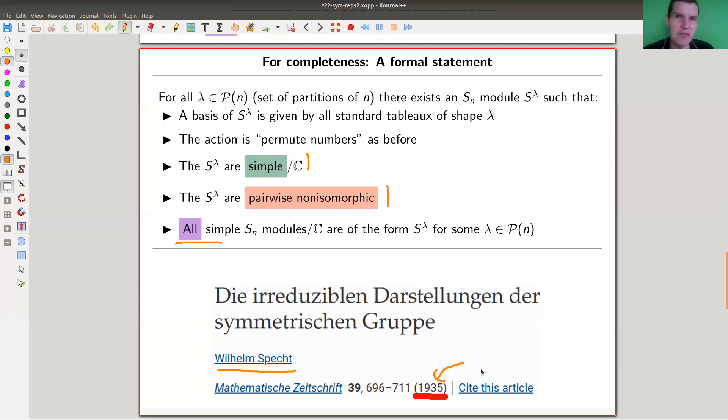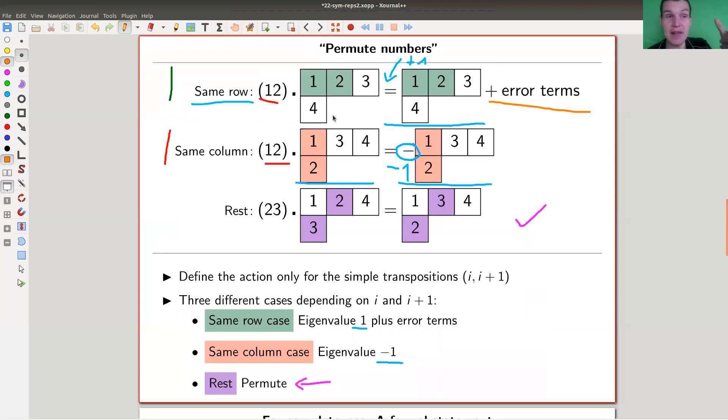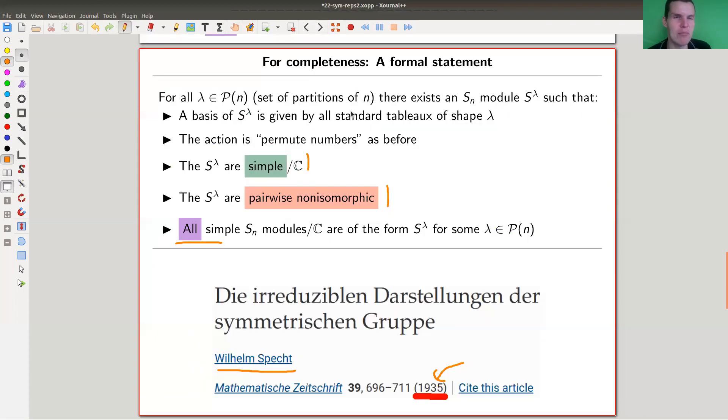There was a reason why it took so long. This is roughly 40 years after Frobenius already understood the representation theory of the symmetric group. I can't tell for sure, but it probably took so long because it's not so easy to write down this messed up action here.